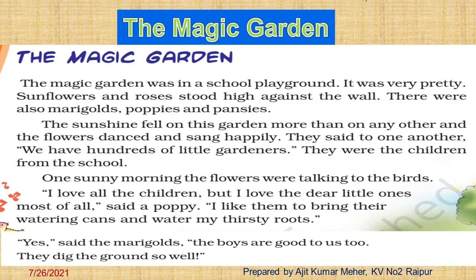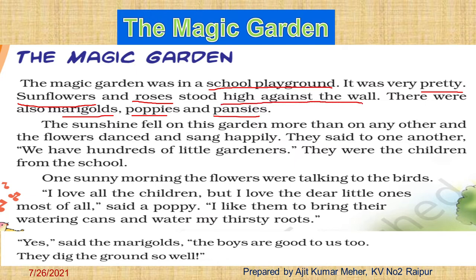The magic garden was located in the school playground. It was very pretty and beautiful. Sunflowers and roses stood high against the wall, and there were also marigolds, poppies and pansies. Many flower plants were there — sunflower, roses, marigolds, poppies and pansies. Sunflowers and roses were a little bit taller, that's why they stood against the wall.